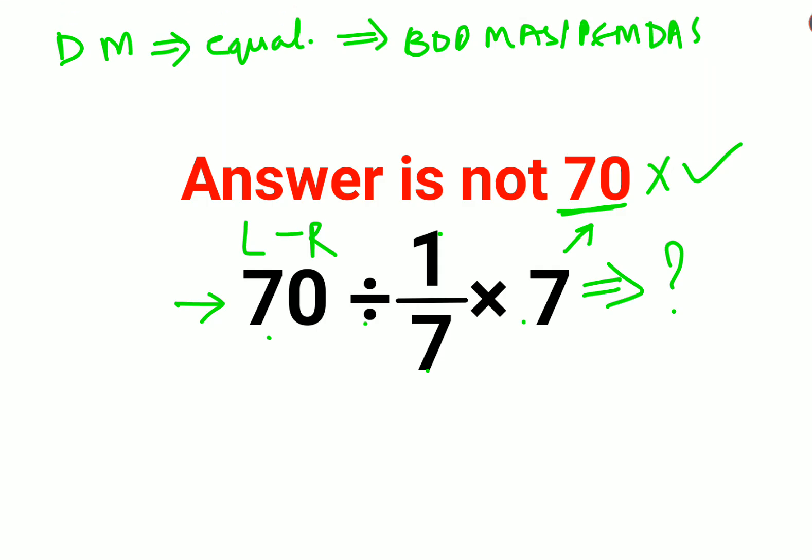Since we have 70 ÷ 1/7, when you have a division sign between two numbers, you need to follow the rule of KCF. K stands for keeping the first number as it is (that is 70), C stands for changing the division sign to multiplication, and F stands for flipping or taking the reciprocal of 1/7, which is just 7.